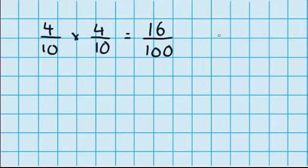So 4 tenths times 4 tenths equals 16 hundredths. Now you know from earlier lessons that we can change 16 hundredths into a decimal. It looks like this, 0.16. Because 16 hundredths is the same as 1 tenth and 6 hundredths. Because there are 10 hundredths in a tenth.